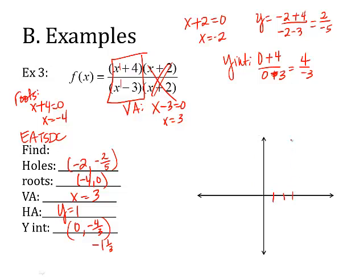Asymptote at x equals negative 3. Horizontal at y equals 1. Root at negative 4, 0. Y-intercept at 0, negative. My hole is at negative 2 and negative 2 fifths — just below the y-axis — so the curve is curving here and curving here.